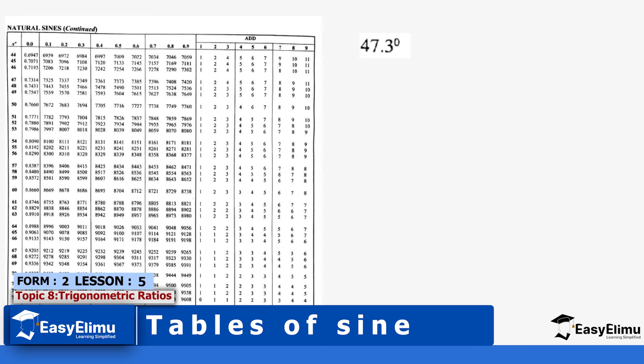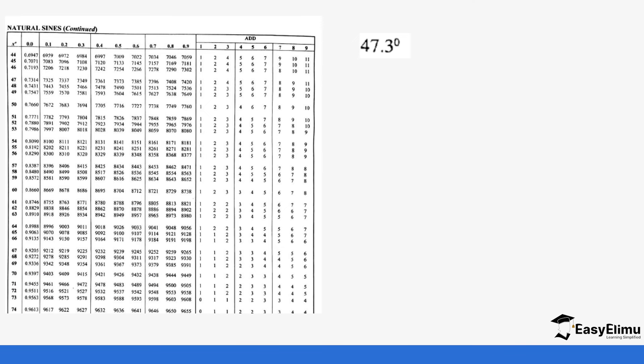For example, if you want to read the sine 47.3 degrees, you're going to go where 47 is and then 0.3. Along the table you're going to get 0.7349 from the table.